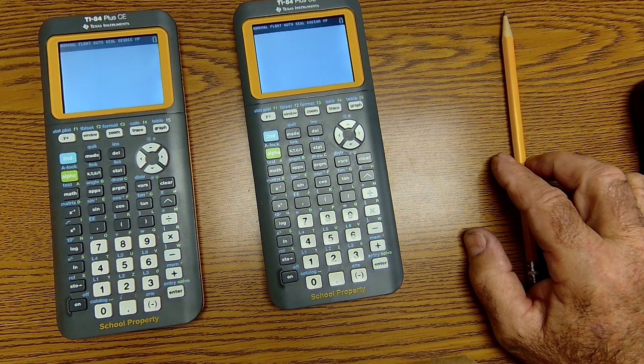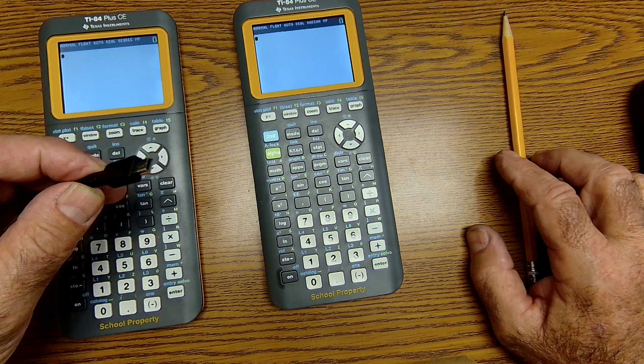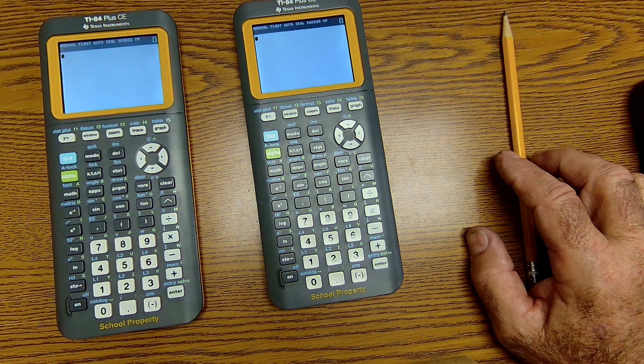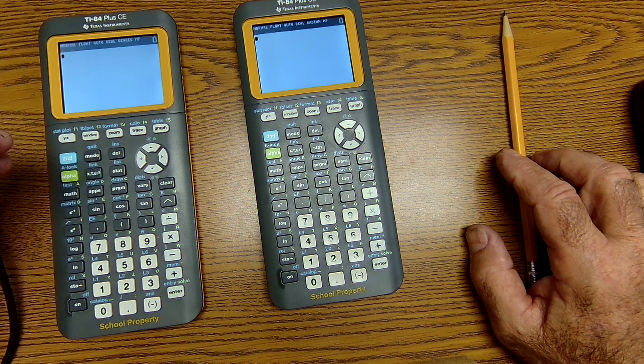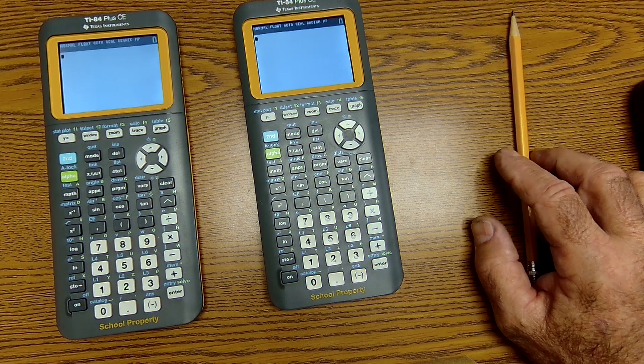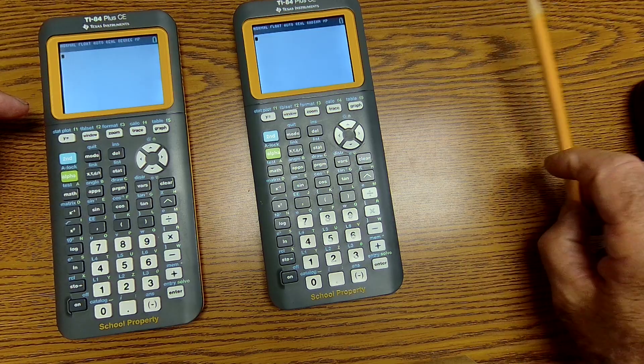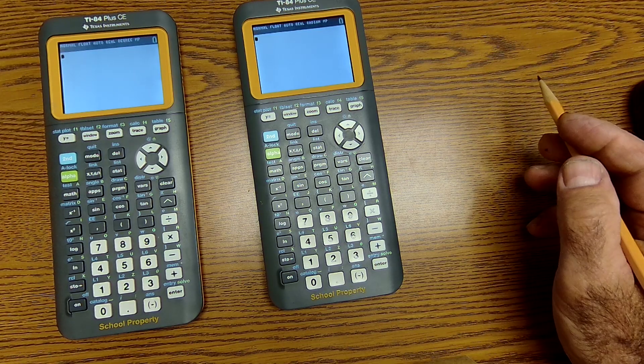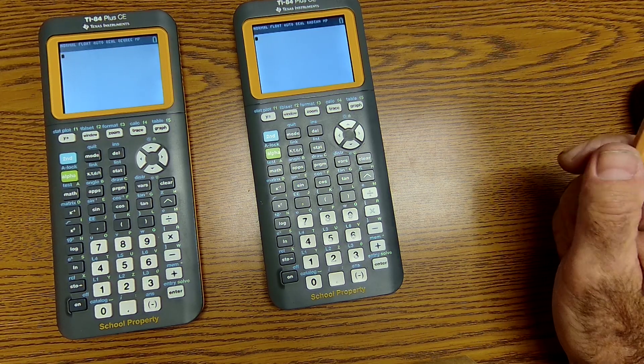And then the second way to take them out of test mode is to plug this into the calculator. This into your desktop computer. Download the TI Connect CE software. The calculator, the specific one you're in, will pop up on that Connect software.